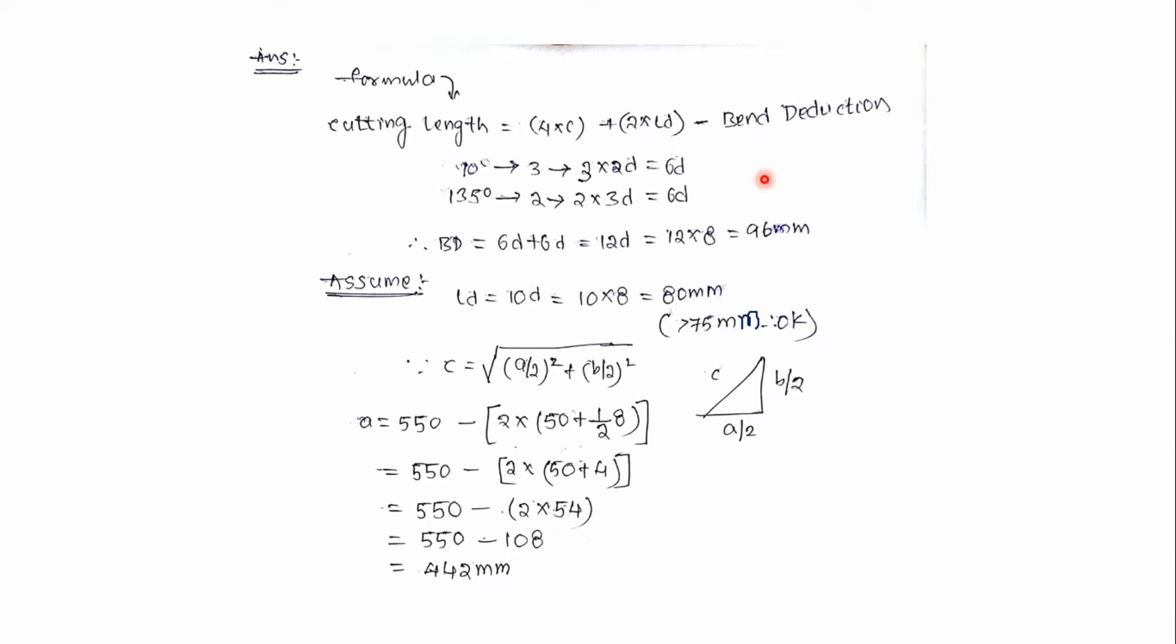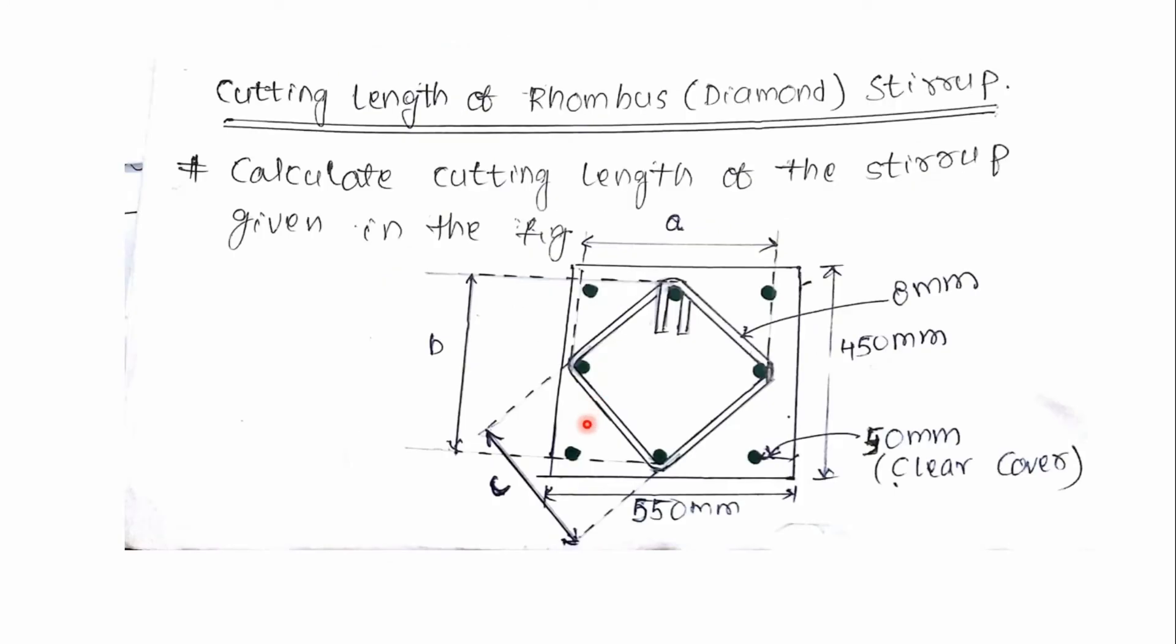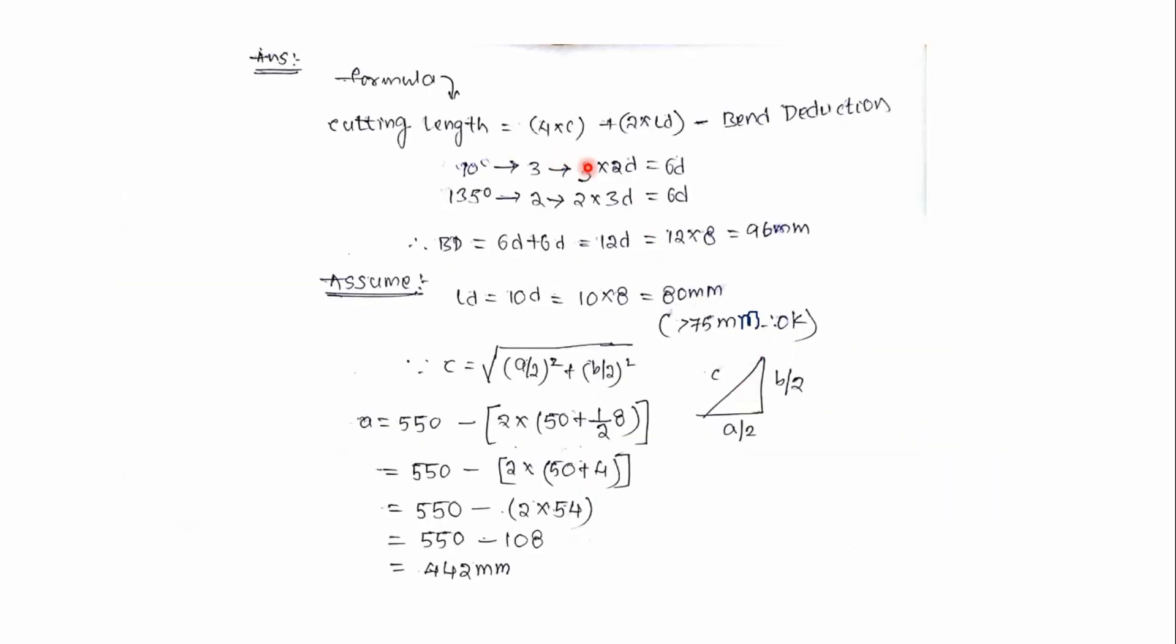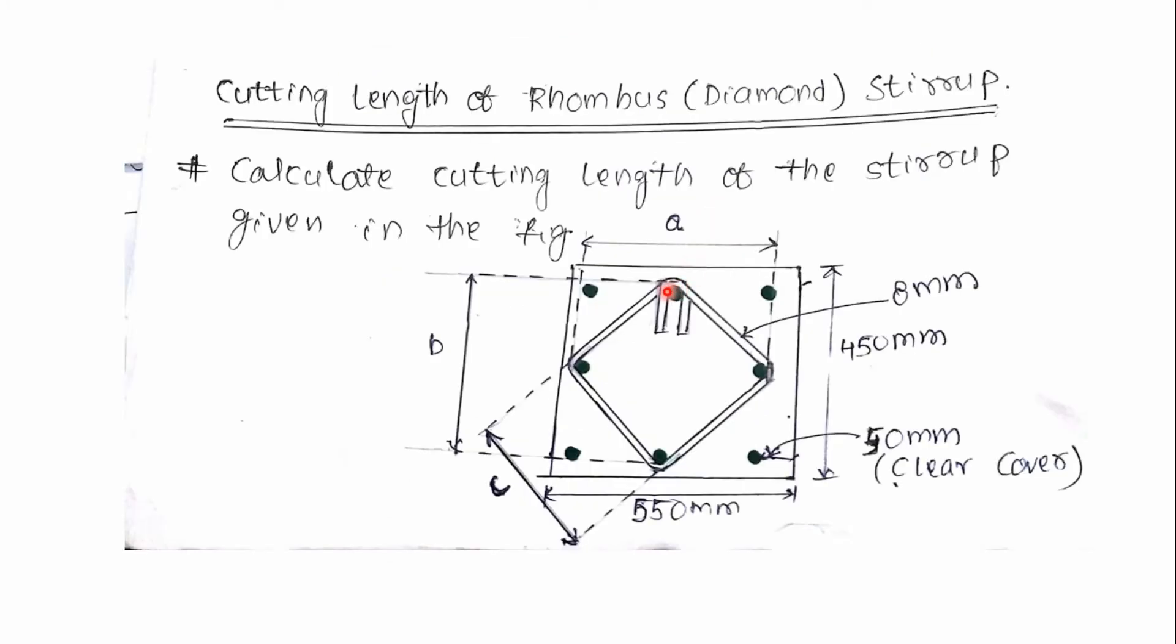If we bend it by 90 degrees then it will increase by 2d. If we bend it by 135 degrees it will increase by 3d. So let's see how many 90 degree bends we have: 1, 2, and 3. So 3 multiplied by 2d which is 6d.